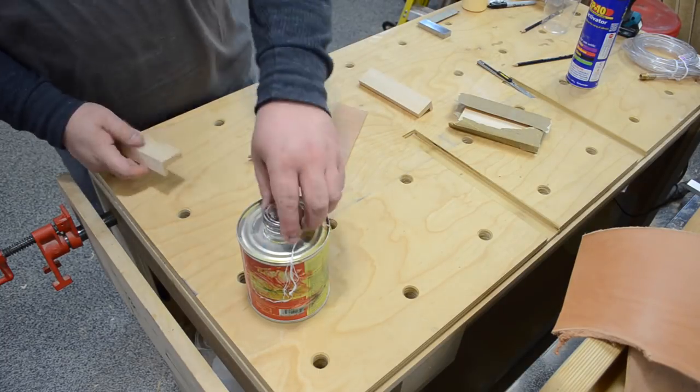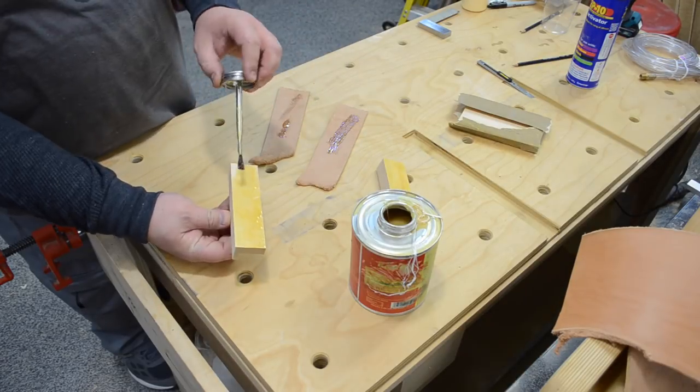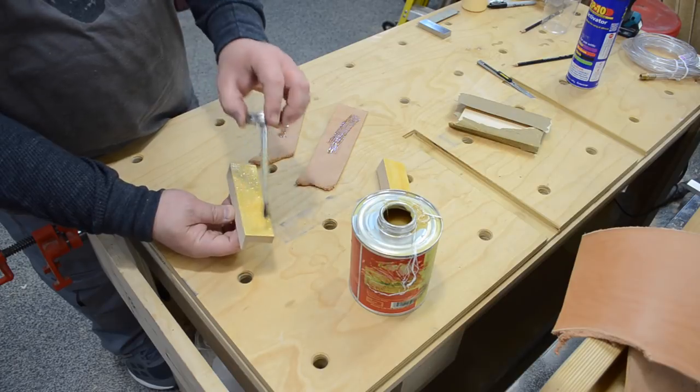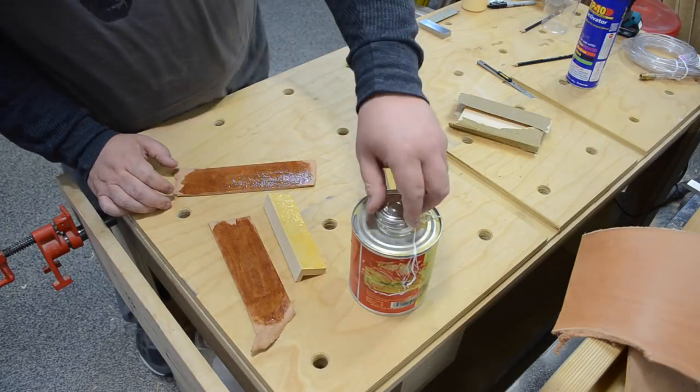Then I just used some contact cement. This stuff works really great with leather. You just put it on both surfaces, wait for the solvent to flash off and the surface get tacky and that way you can position them on there.